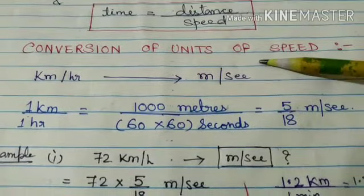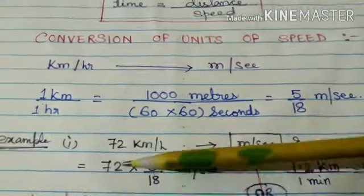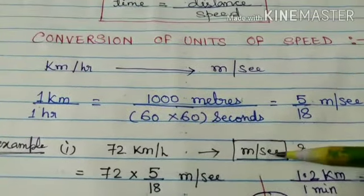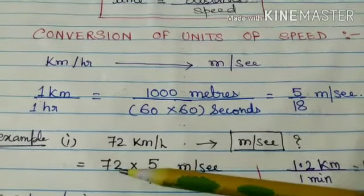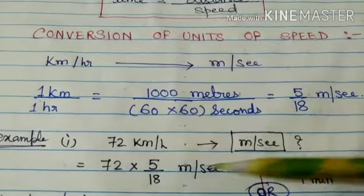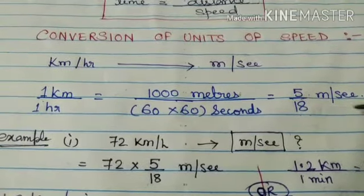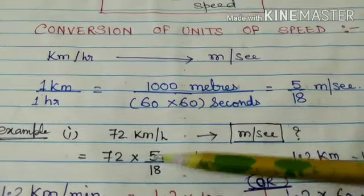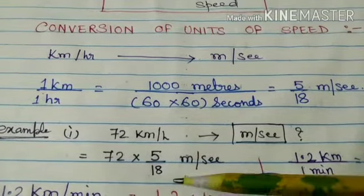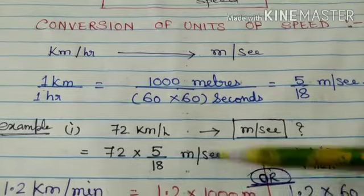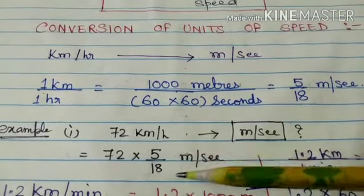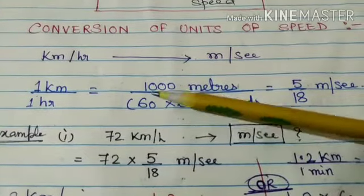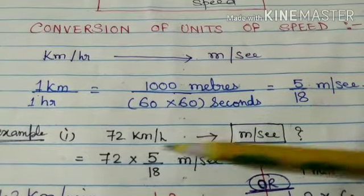So when we need to convert, for example, 72 kilometers per hour into meters per second, we can write 72 multiplied by 5/18 meters per second. Instead of going through the full derivation process, we can directly write 5/18 in place of kilometers per hour. This is the shortcut to convert from kilometers per hour to meters per second.